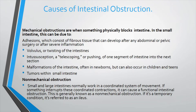Next, malformations of the intestine — these often occur in newborns, but can also occur in children and teens. In this case, congenital anomalies and malformations are present in the intestine. Tumors in the small intestine — abnormal growth — also represent a mechanical obstruction causing blockage in the small intestine.